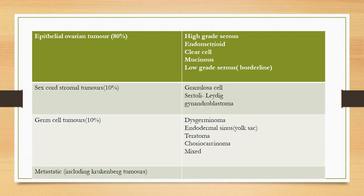Epithelial tumors can be benign, borderline, or malignant. High-grade serous carcinomas are the most common. Then endometrioid, clear cell, mucinous, and low-grade serous cancers follow.